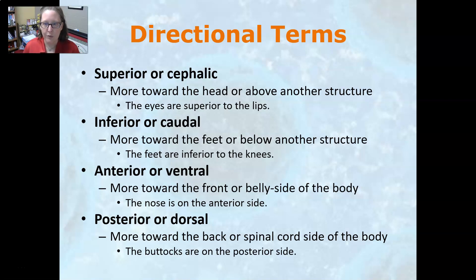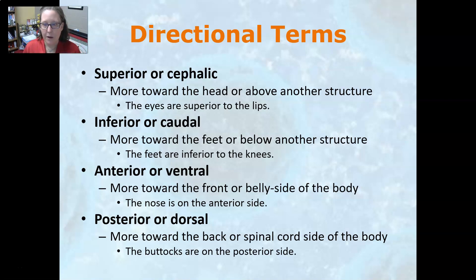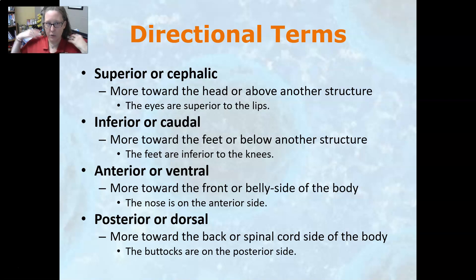For example, the feet are inferior to the knees. Then you have anterior or ventral, meaning towards the front or belly side of the body. For example, the nose is on the anterior side of the face. Its opposite is posterior or dorsal, meaning towards the back of the body. For example, the buttocks are on the posterior side of your body.